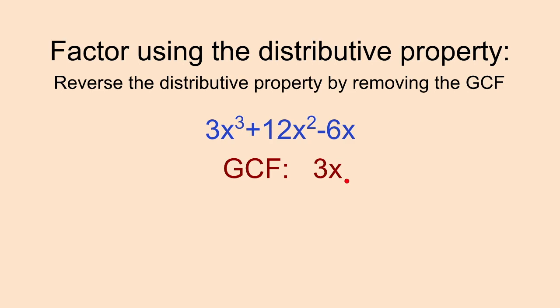So now what we need to do, since we have the GCF, is figure out if we removed a 3x from each of these terms, what would remain? As a reminder, we put 3x, because it's the GCF, out in front of our parentheses, and then whatever would remain goes into the parentheses. So again, I'm going to pause and let you see if you can decide what would remain if we removed a 3x from each term.